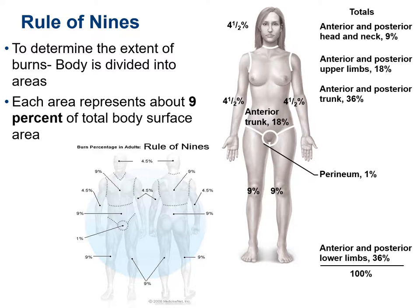So for the left upper limb it is 4.5 plus 4.5, that is 9%, and for the other upper limb again 9%. For the lower limbs, the anterior surface of the right lower limb is 9% and the posterior surface is also 9%, so that is 18%. The anterior and posterior surfaces of the left lower limb are also 9% each, giving 18%. So both lower limbs together account for 36%.